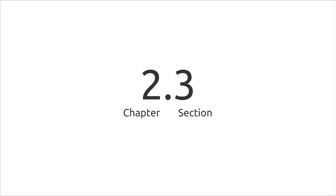This numbering convention will have a first number and a second number separated by a point. The first number denotes the chapter and the second number denotes the section. So an example is 2.3 — chapter 2, section 3.